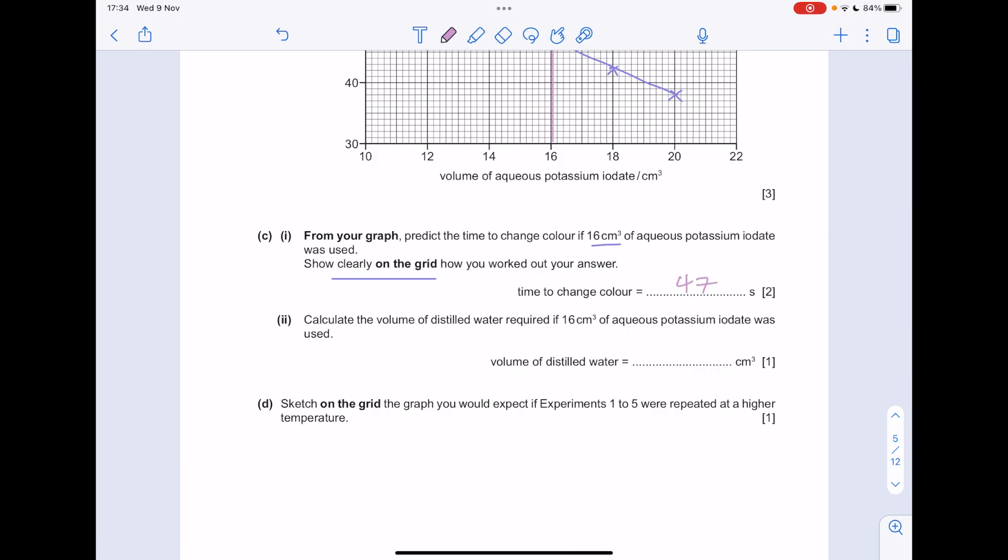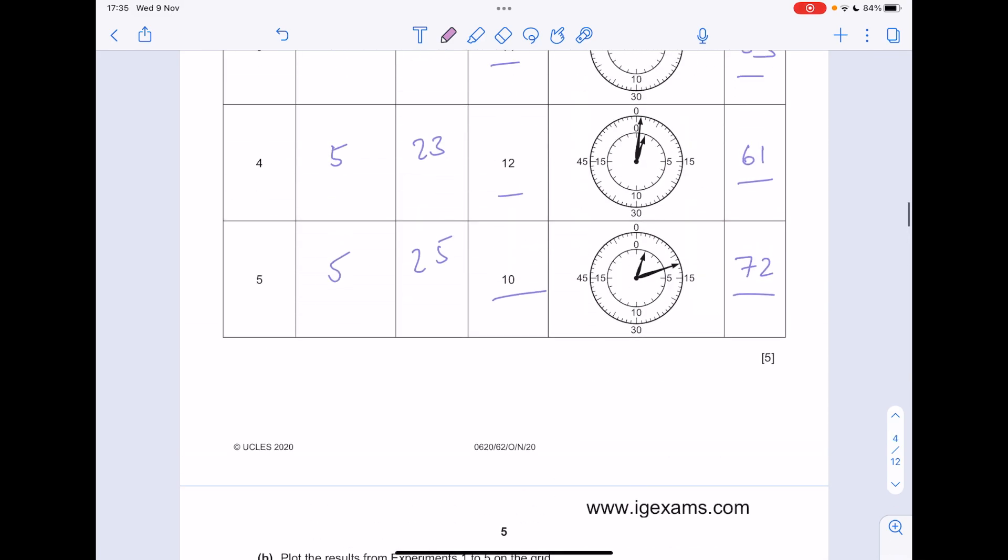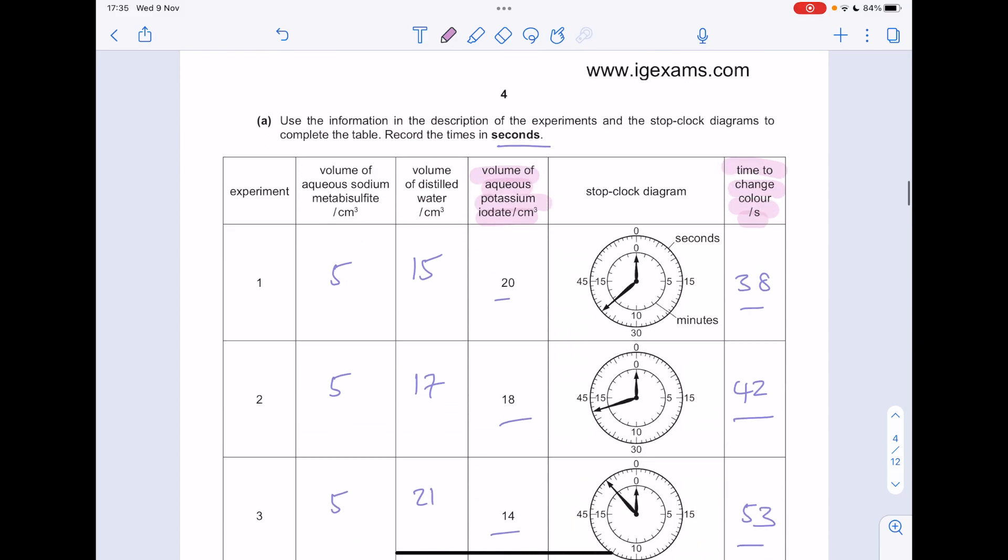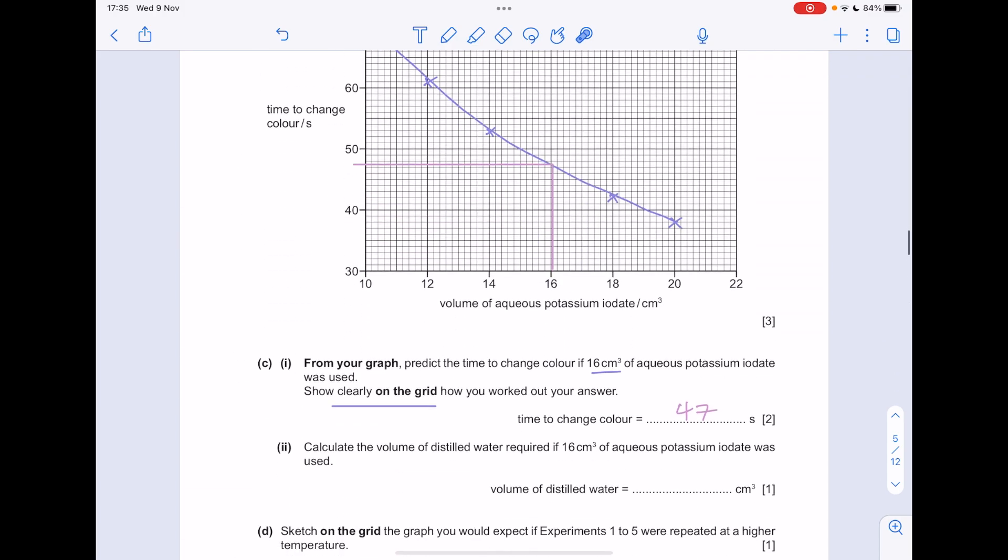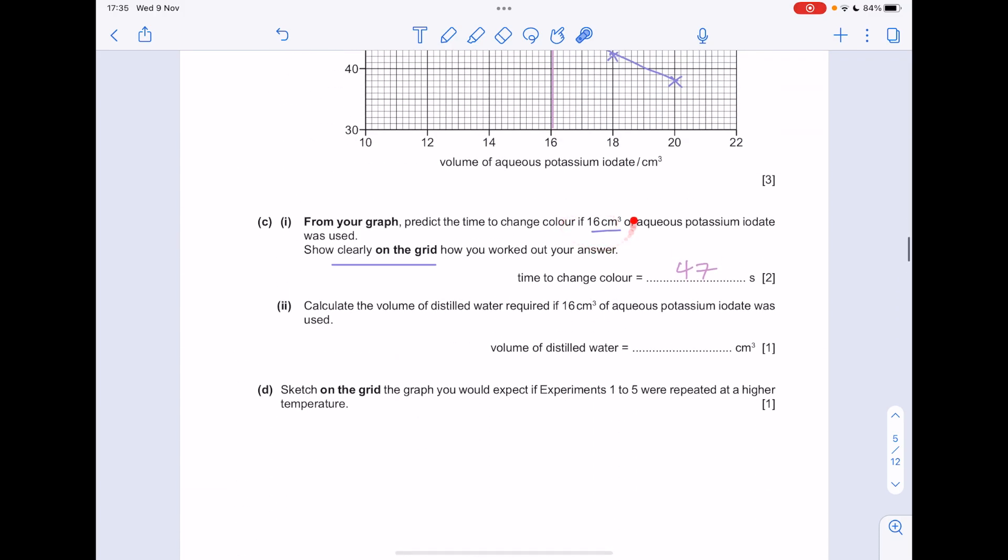Calculate the volume of distilled water required if 16 centimetres cubed of aqueous potassium iodate was used. So in order to work this out, remember that these total volumes here didn't change. It was 35 centimetres cubed throughout. So what number do we need to add to 16 to make 35? Well, that's 19 because we need the same volume throughout.